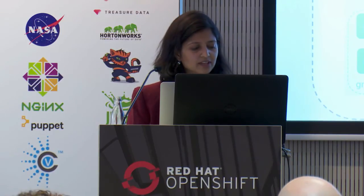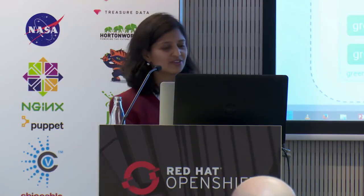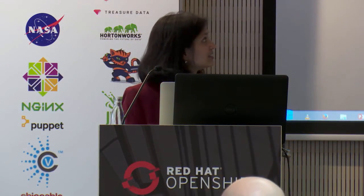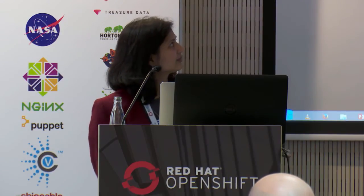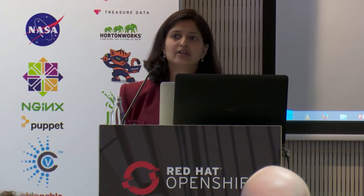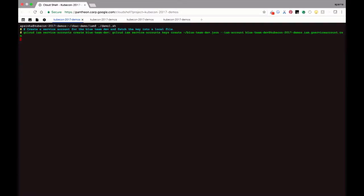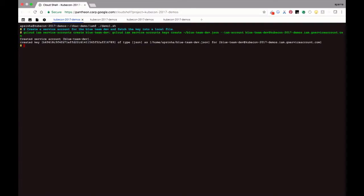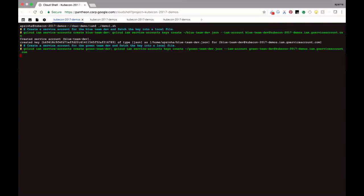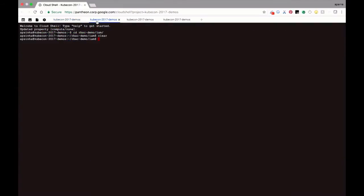In order to do this demo, I have created a three-node cluster in Google Container Engine in Google Cloud. To show this demo you actually need more than one user, so I'm going to pretend to be multiple users. In this first tab, I am the super cluster admin, and the other two tabs represent a green team and a blue team. As super cluster admin, I'm going to create a service account for the blue team and fetch those credentials into a local file, and the same thing for the green team.